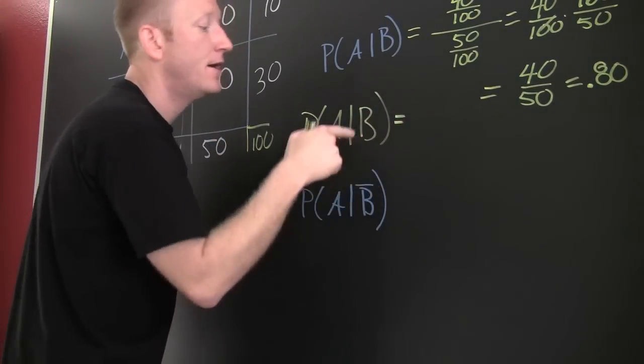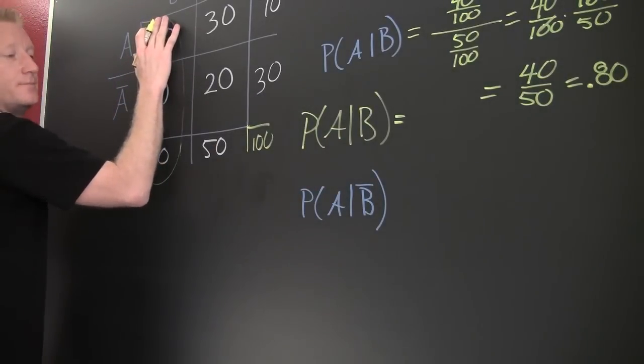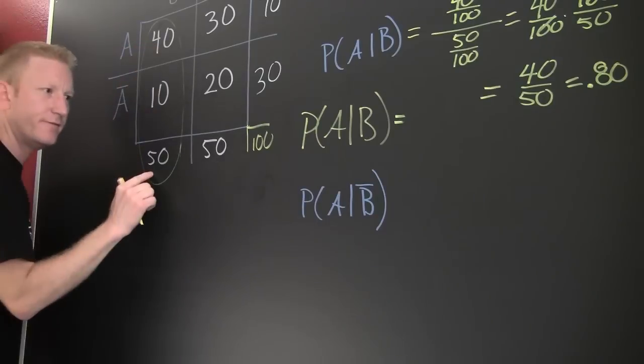So then B has already happened. Restrict yourself to this column. How many are A? 40. Out of how many? 50.